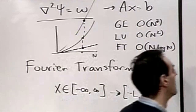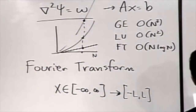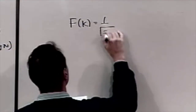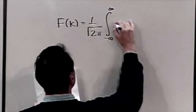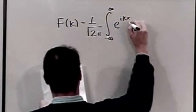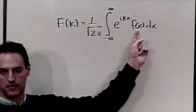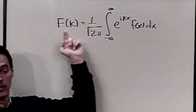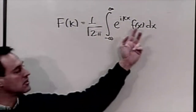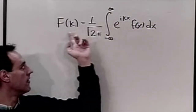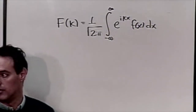Let's define the Fourier transform. It takes a function from physical space into spectral space. You take a function f, and its Fourier transform is capital F̂(k), defined by multiplying f by e^(ikx) and integrating from negative infinity to infinity — giving you the transform variable in wavenumber space.